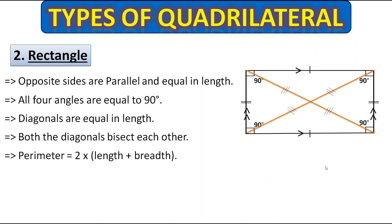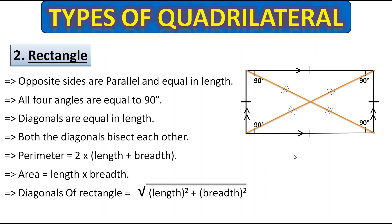To find the perimeter of a rectangle, add the length and breadth and multiply by 2. To find the area, multiply length by breadth. To find the length of a diagonal of a rectangle, find the square of the length and the square of the breadth, add them together, and then take the square root — you will get the diagonal length.